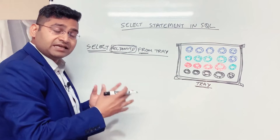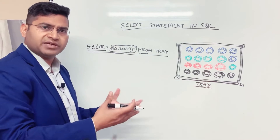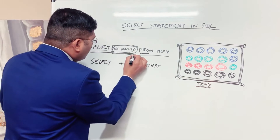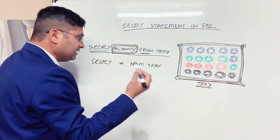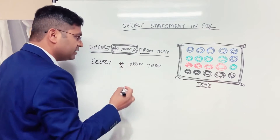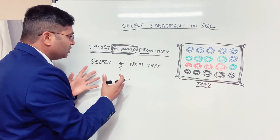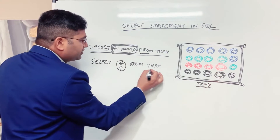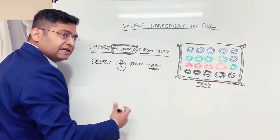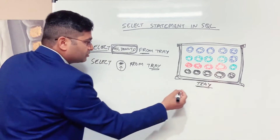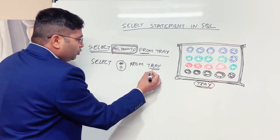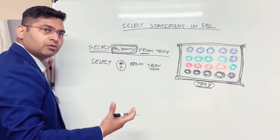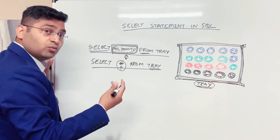If we want to convert this statement into SQL — SQL is structured query language, very similar to plain English — it will be something like: SELECT * FROM tray. For all items you want to select from any table in SQL, the wildcard is star. When we say star, it means select all items from the table. So we say SELECT * FROM table_name, where table_name is the unique identifier of the table from where we are fetching the data. Similar to how tray relates to donuts, table_name relates to the data we want to fetch.